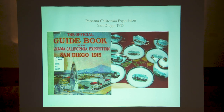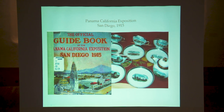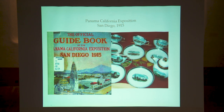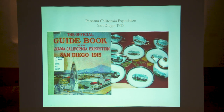In 1915, the exposition gets underway in San Diego. You see the guidebook and this really cool set of exposition china — it was for sale on eBay. Twitchell promoted the idea that the New Mexico exhibit at the Panama-California Exhibition of 1915 should not be a glorified pumpkin show; it should feature the historical traditions of New Mexico. So we have Twitchell to thank for the fact that that building did get built.